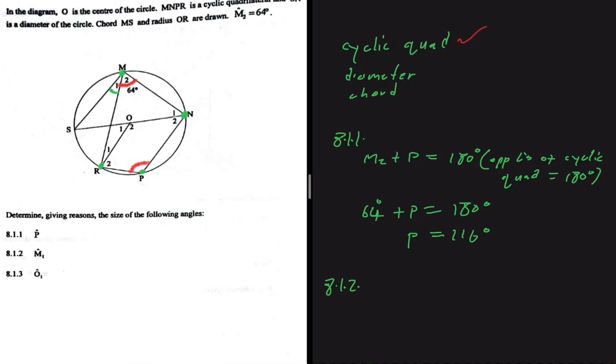So now let's use the keyword diameter. If we use the keyword diameter there, we'll see that M1 plus M2 shall be close to 90 degrees, right? Because they're being subtended by diameter SN.